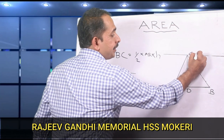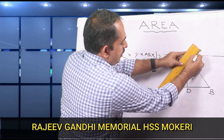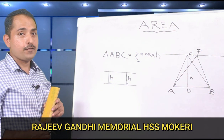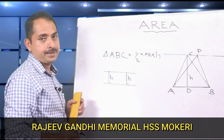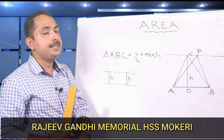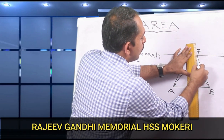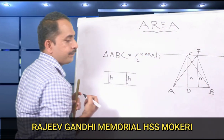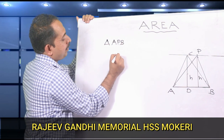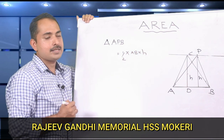Now we mark a point P somewhere on this parallel line, and join AP and PB. The new triangle formed is triangle APB. Since the lines AB and the parallel line through C are parallel, the heights of triangles ABC and APB are the same — that is, the height of APB is also H. Therefore, the area of triangle APB = half × AB × H, the same as triangle ABC.